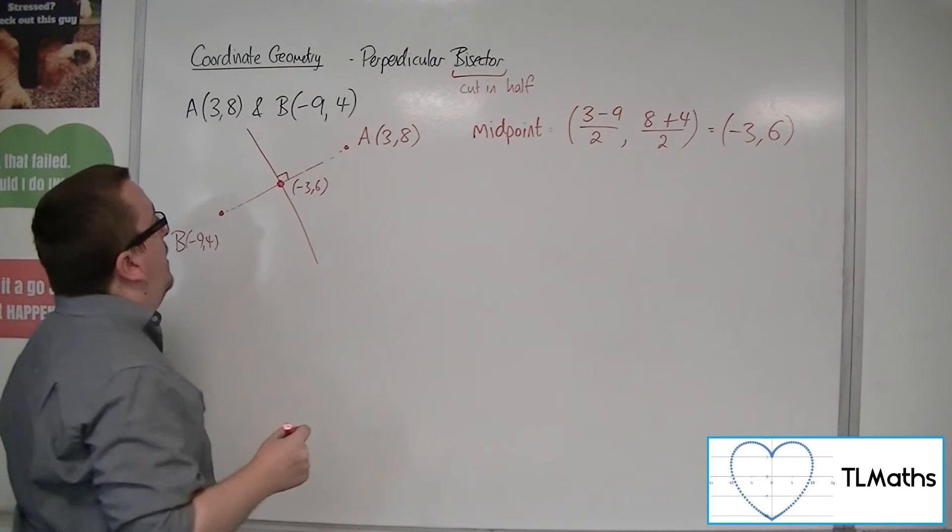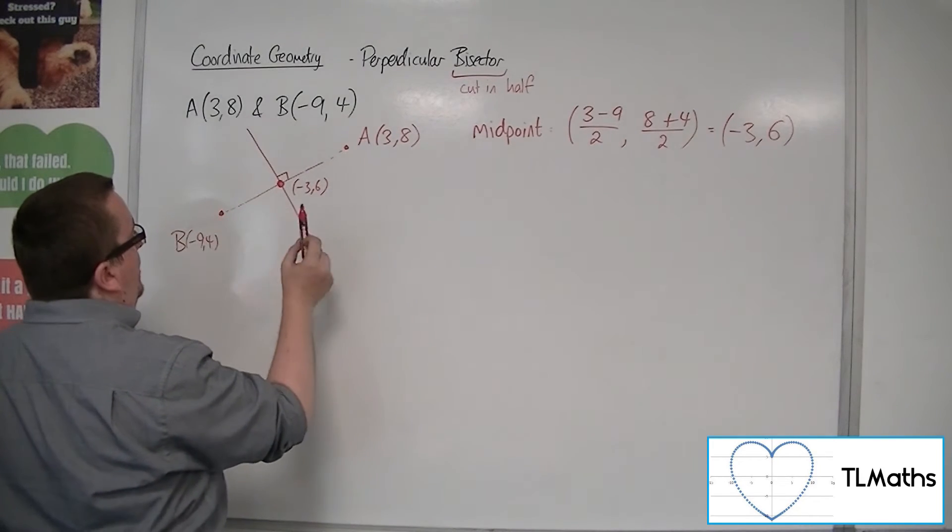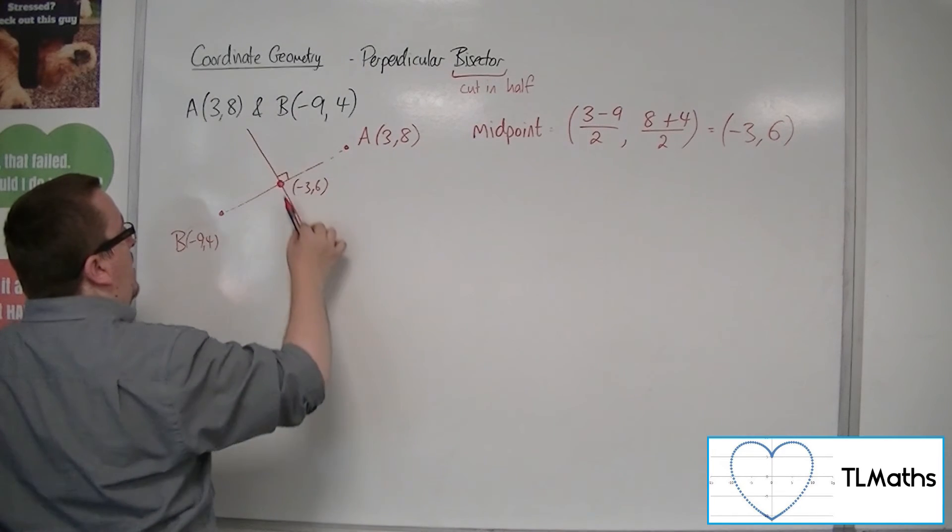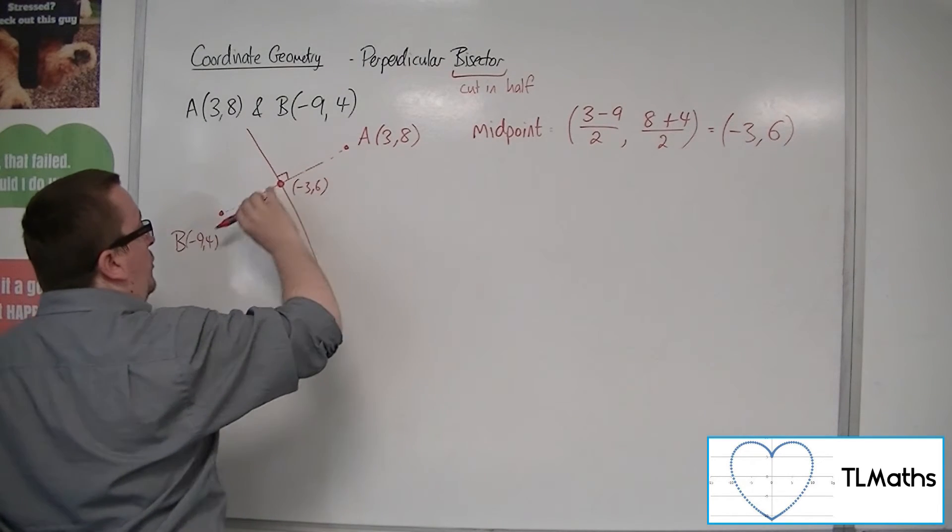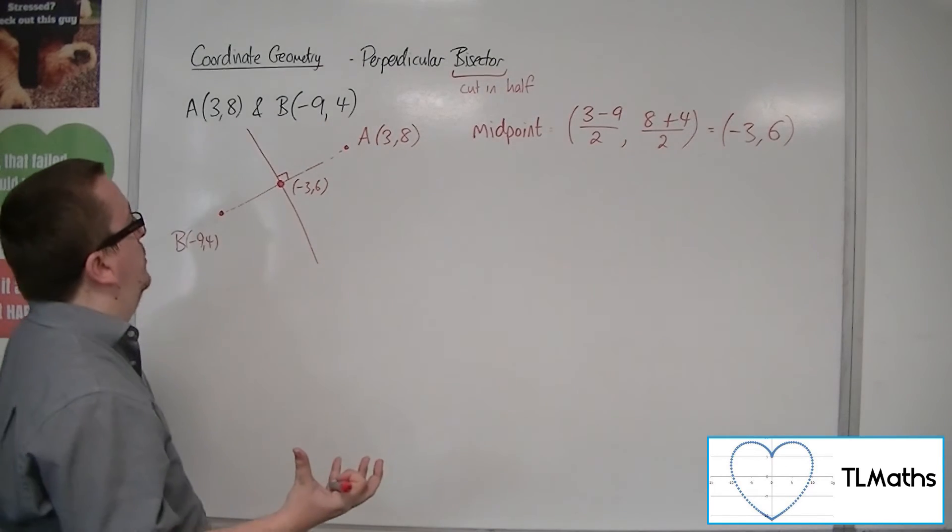Now we need to find the equation of the perpendicular bisector, the line that crosses through here. So because it's perpendicular to this chord, it will have a gradient that is the negative reciprocal of the gradient of that chord.